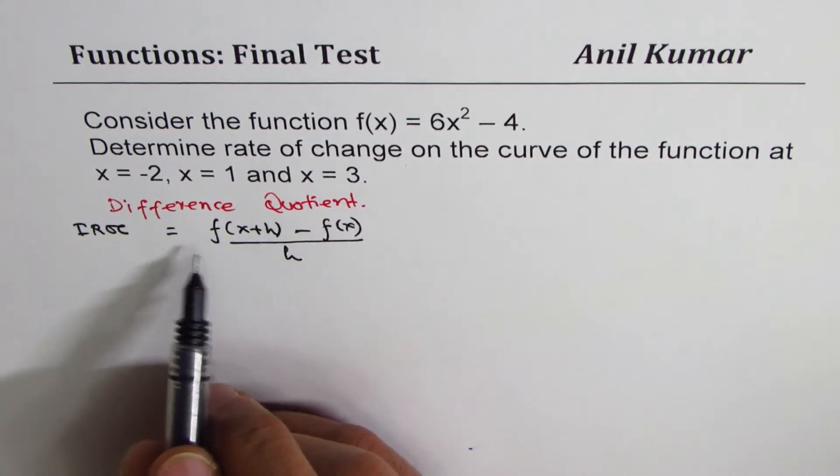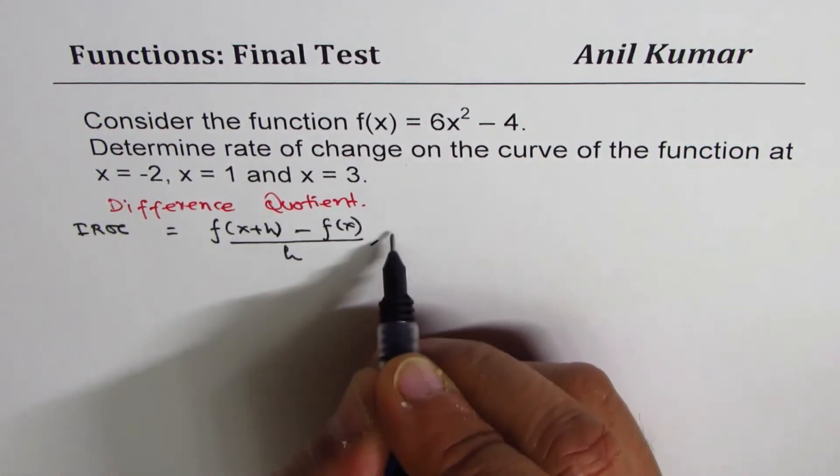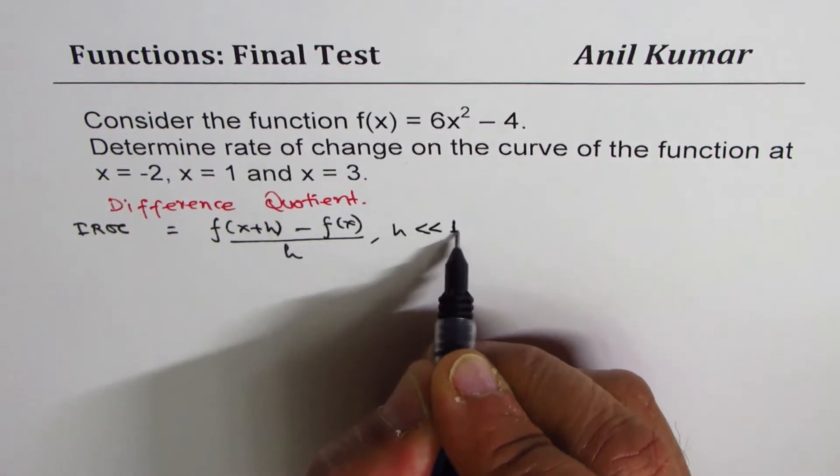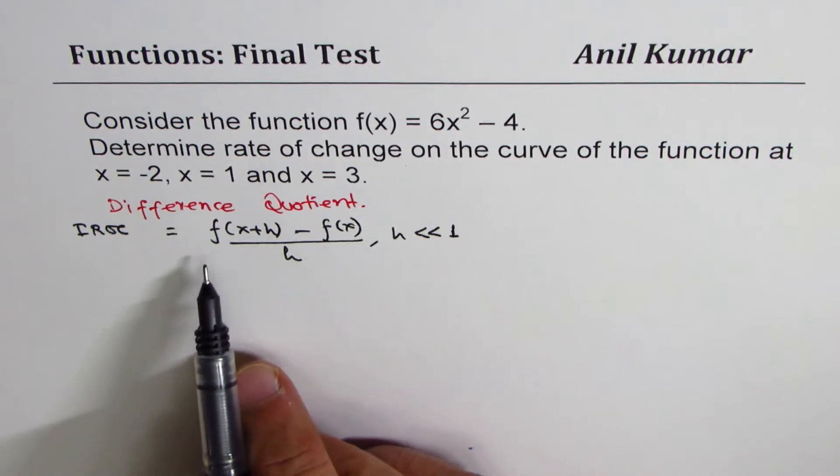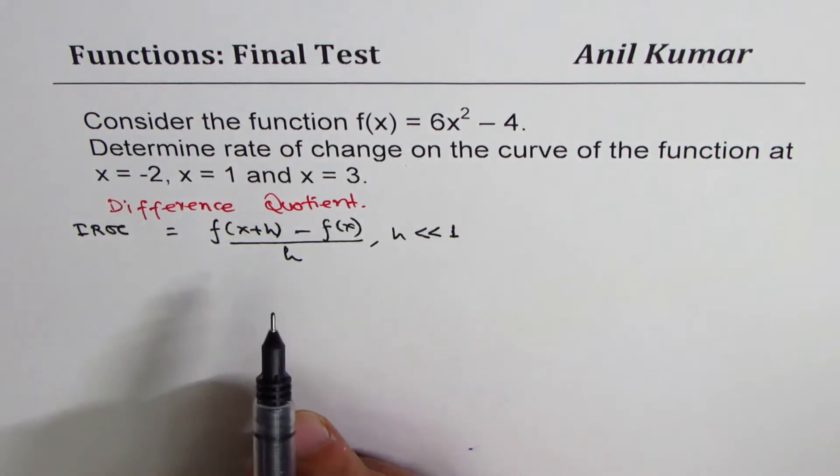Now, there are two conventions. We can write limit h approaches 0, or we can say h is very, very small as compared to 1. Many of my students haven't done limits, so I'm avoiding that nomenclature.